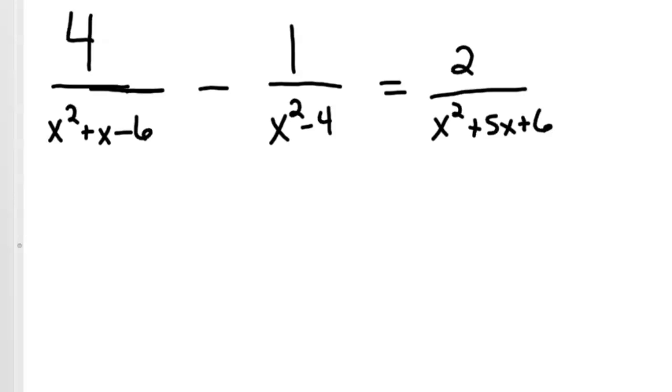So this is a rational equation. How we solve these, if you're taking a traditional math class, traditional algebra 1 or college algebra, is you want to factor these denominators first so we can come up with a common denominator that isn't so complex.